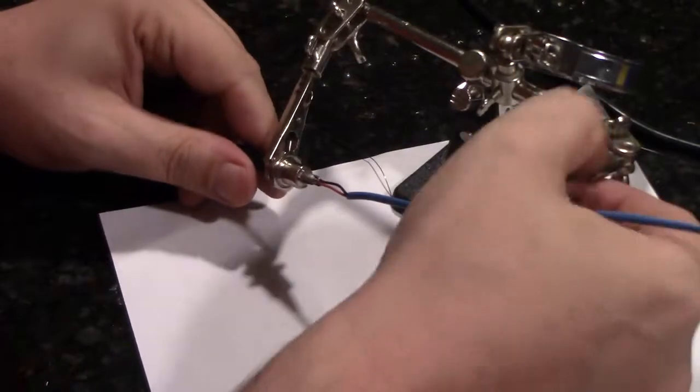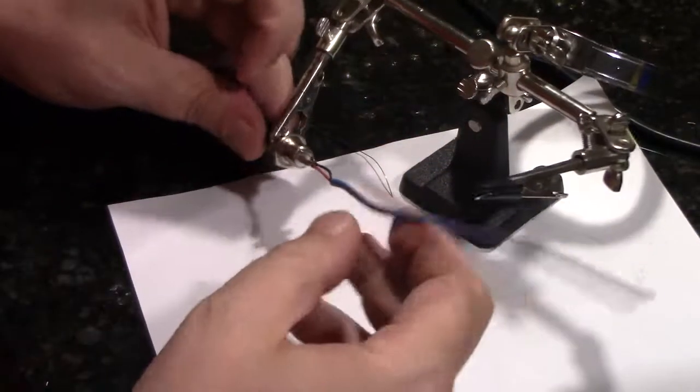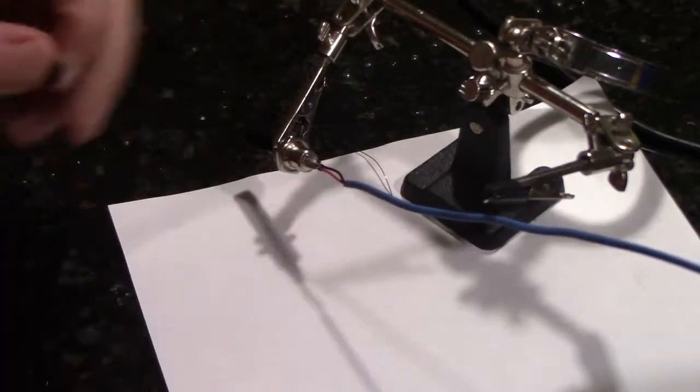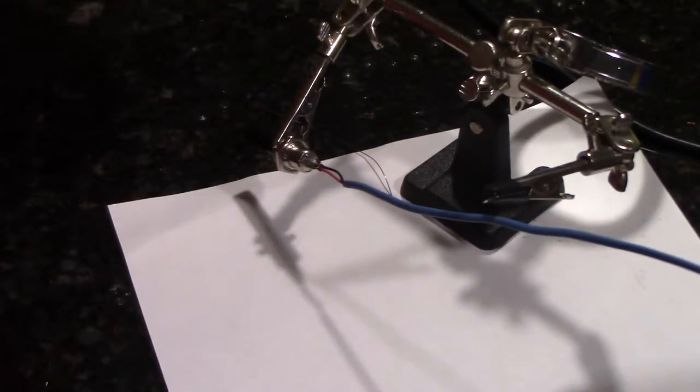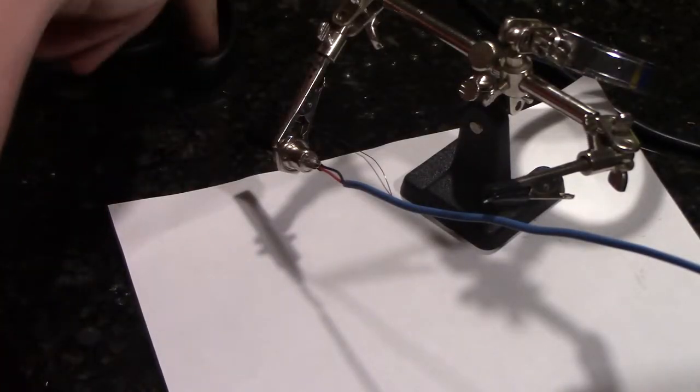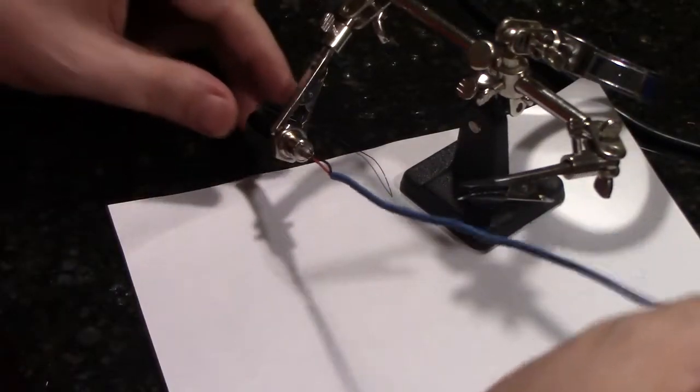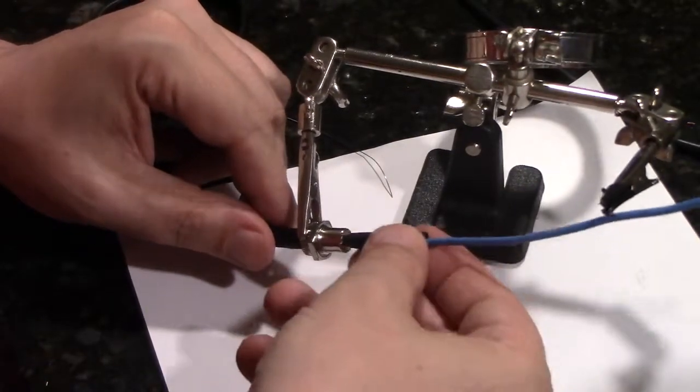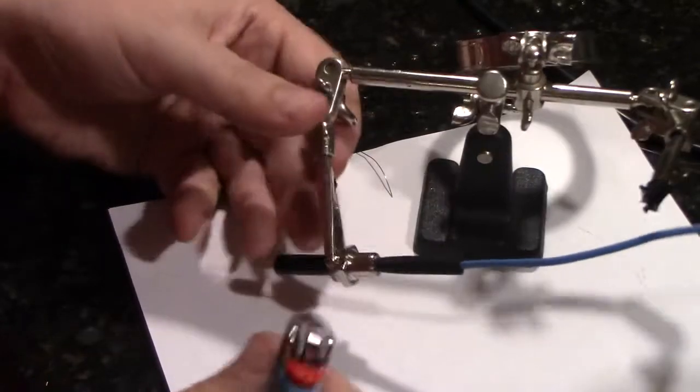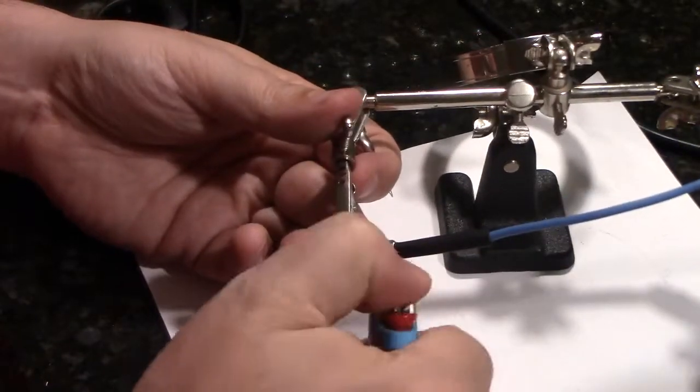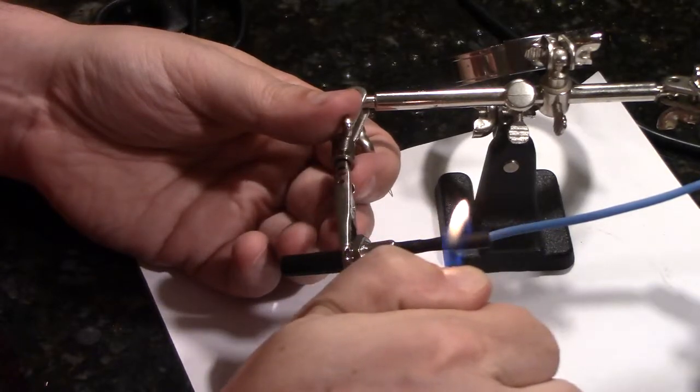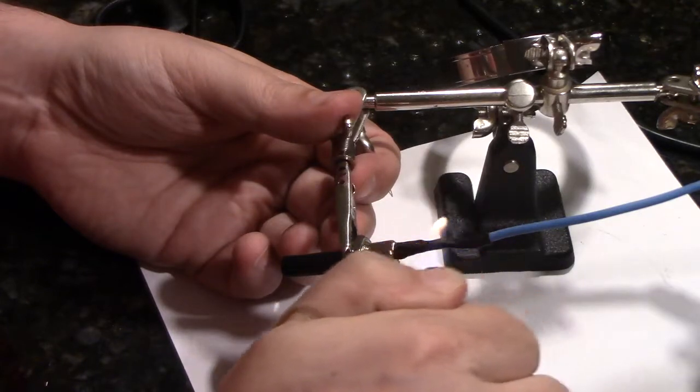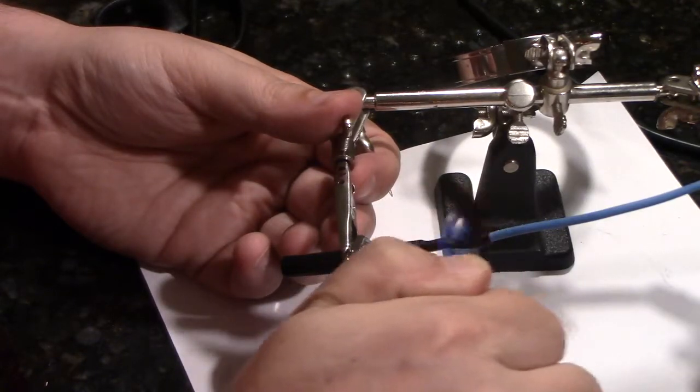Now that is connected, I'm going to use another piece of heat shrink tubing here to cover up all of the bits that are unprotected. Again, this just keeps our wires from shorting and holds them together a little bit better.